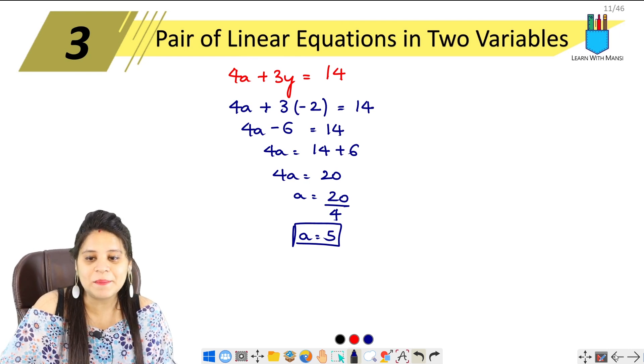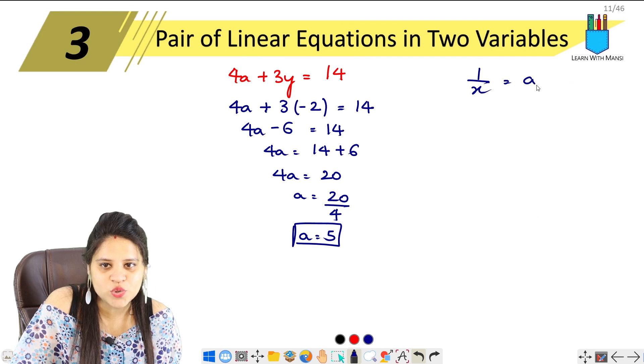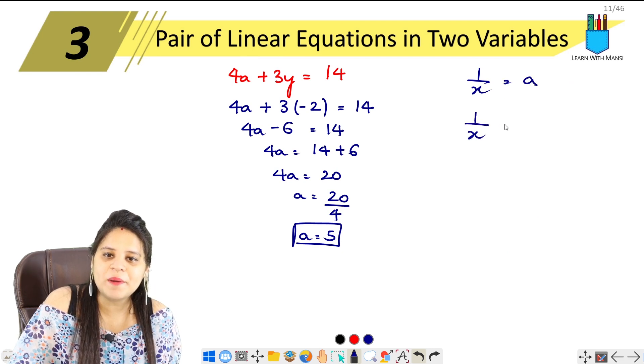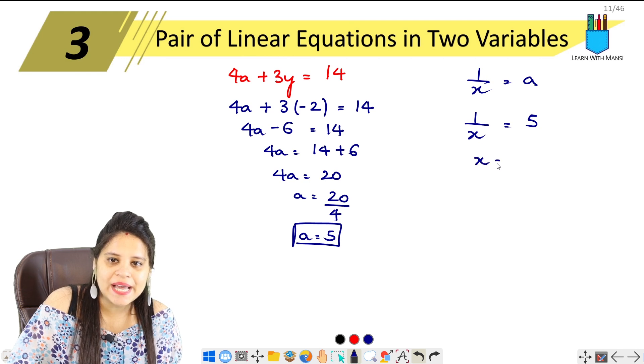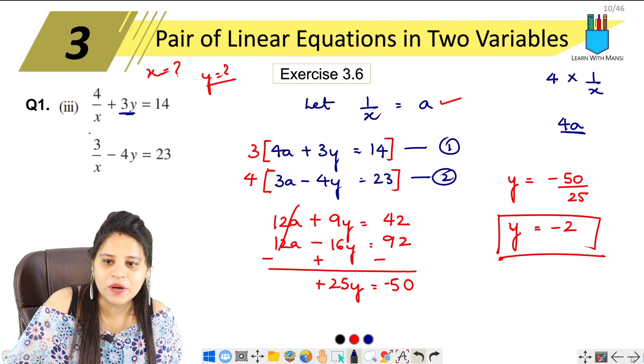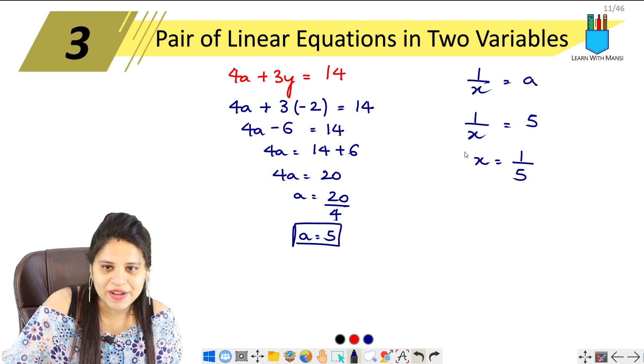So we had let one upon x equals to a, which means one upon x equals to 5. So this will be x equals to one upon... sorry, x equals to 5.